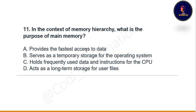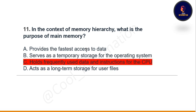Next question: in the context of memory hierarchy, what is the purpose of main memory? Option A: provides the fastest access to data. Option B: serves as a temporary storage for the operating system. Option C: holds frequently used data and instructions for the CPU. Option D: acts as a long-term storage for user files. The correct option is C — holds frequently used data and instructions for the CPU.